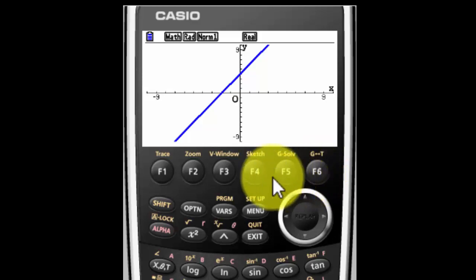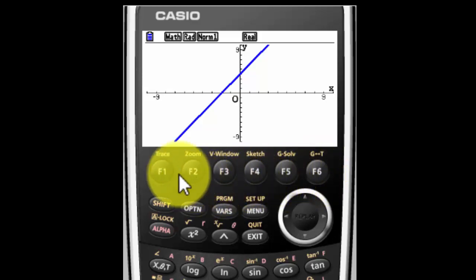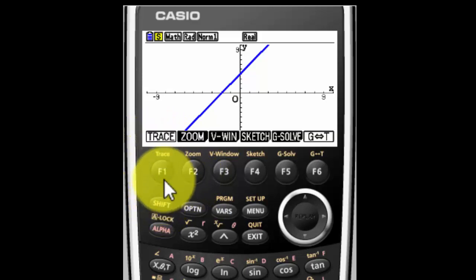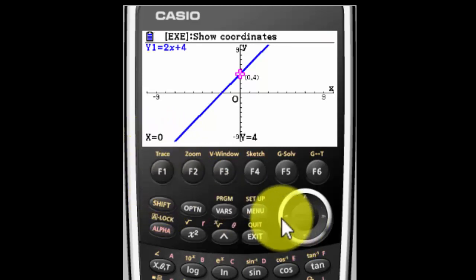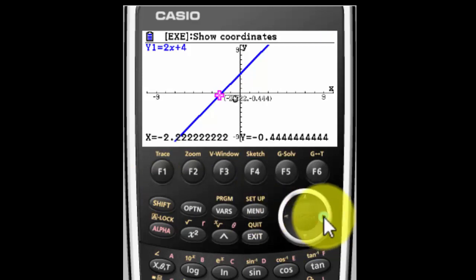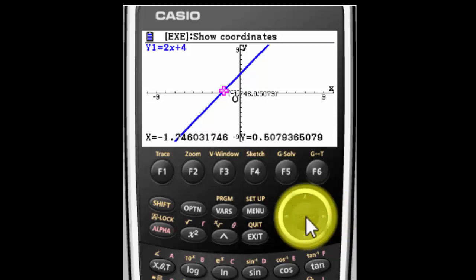Now let's say I want to see exactly what the x-intercept is. I want to trace it. So I'm going to hit Shift F1 and I can trace it. And it will tell me at every point exactly what my values are. And I can't quite get it exactly on the x-intercept but pretty darn close. I'm guessing it's probably about negative 2.